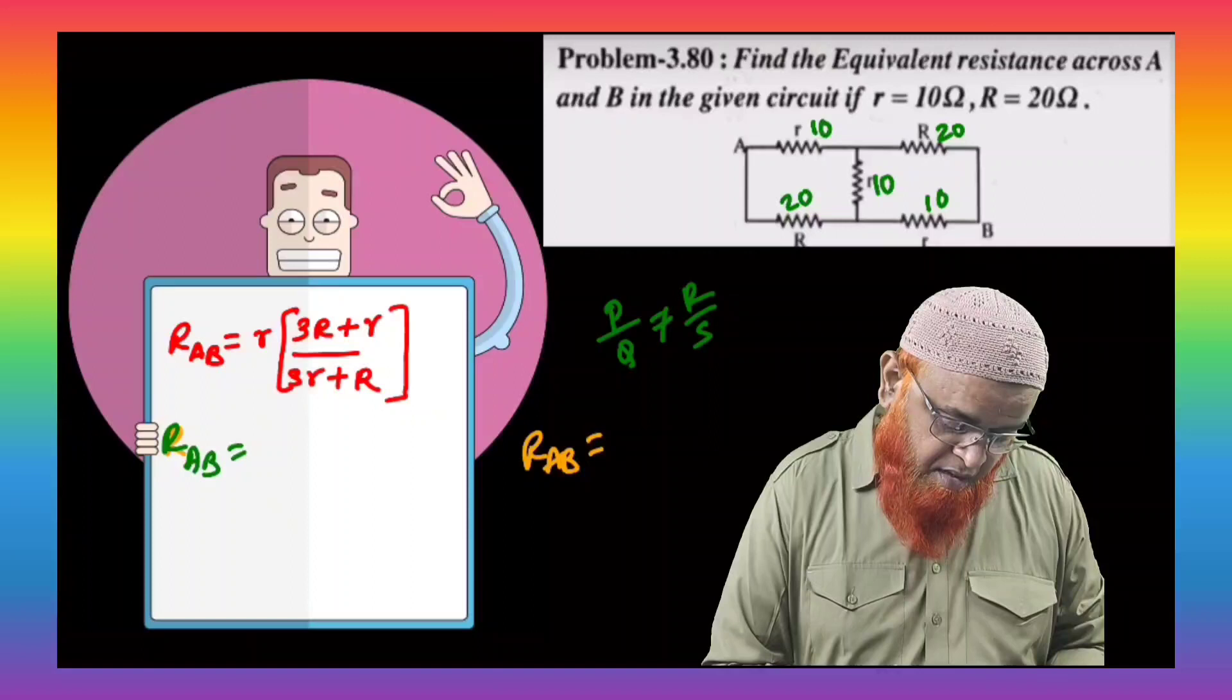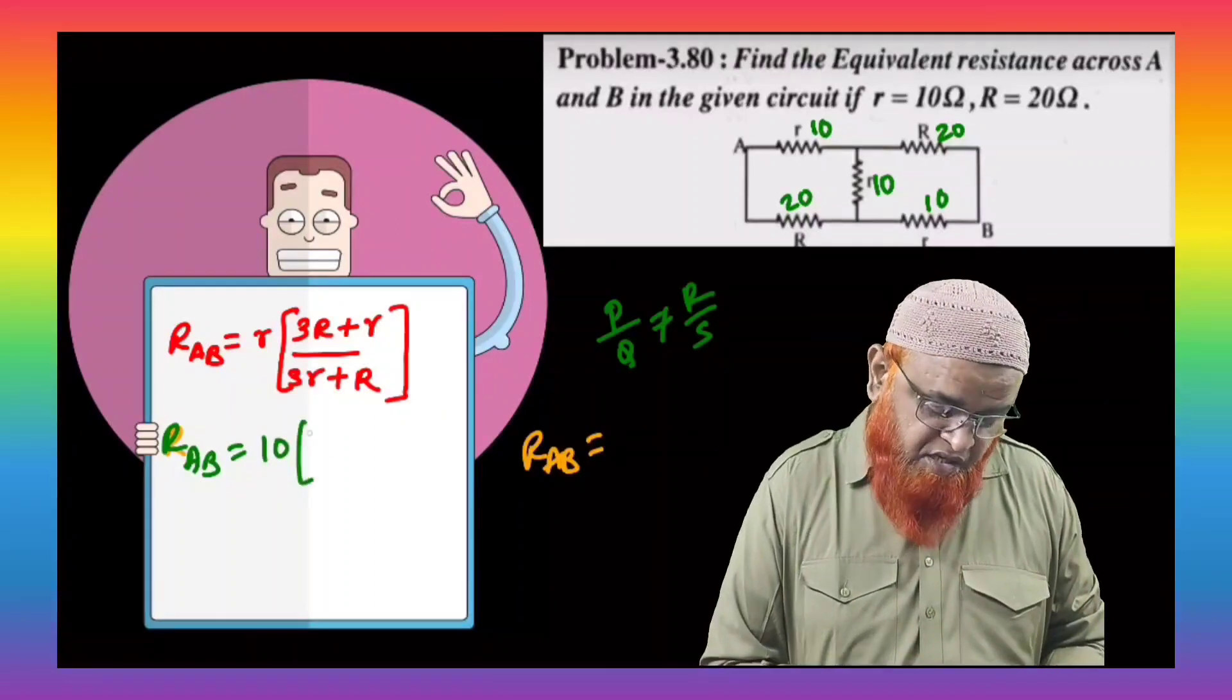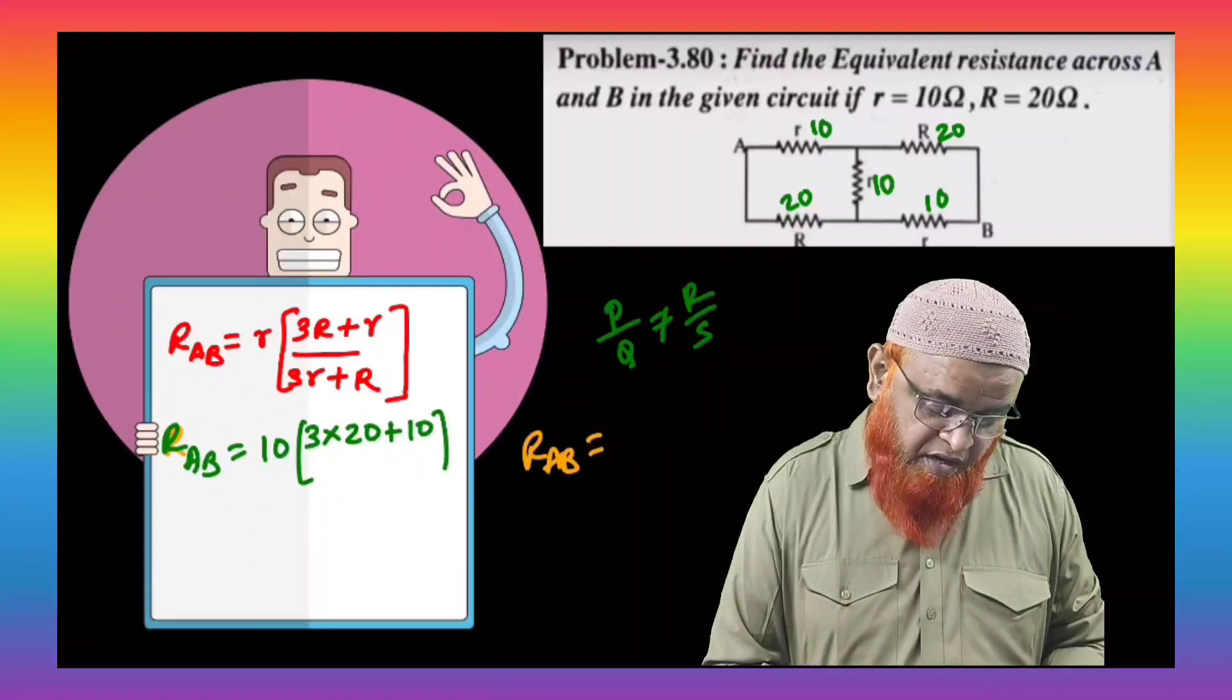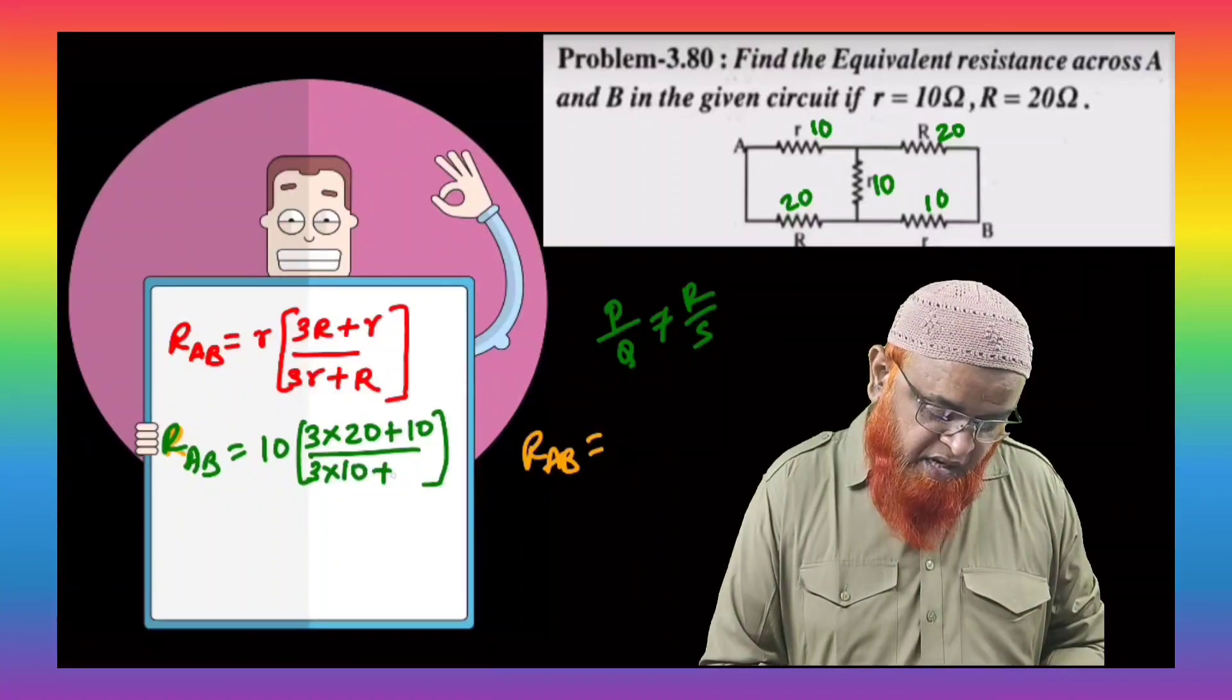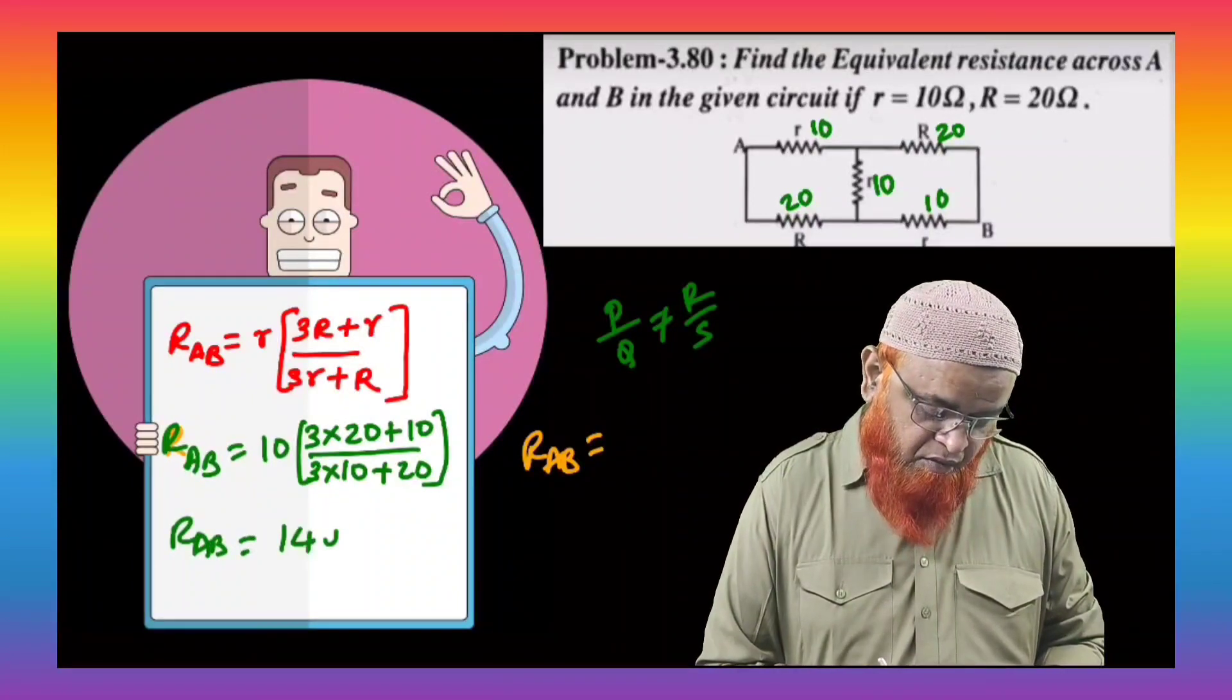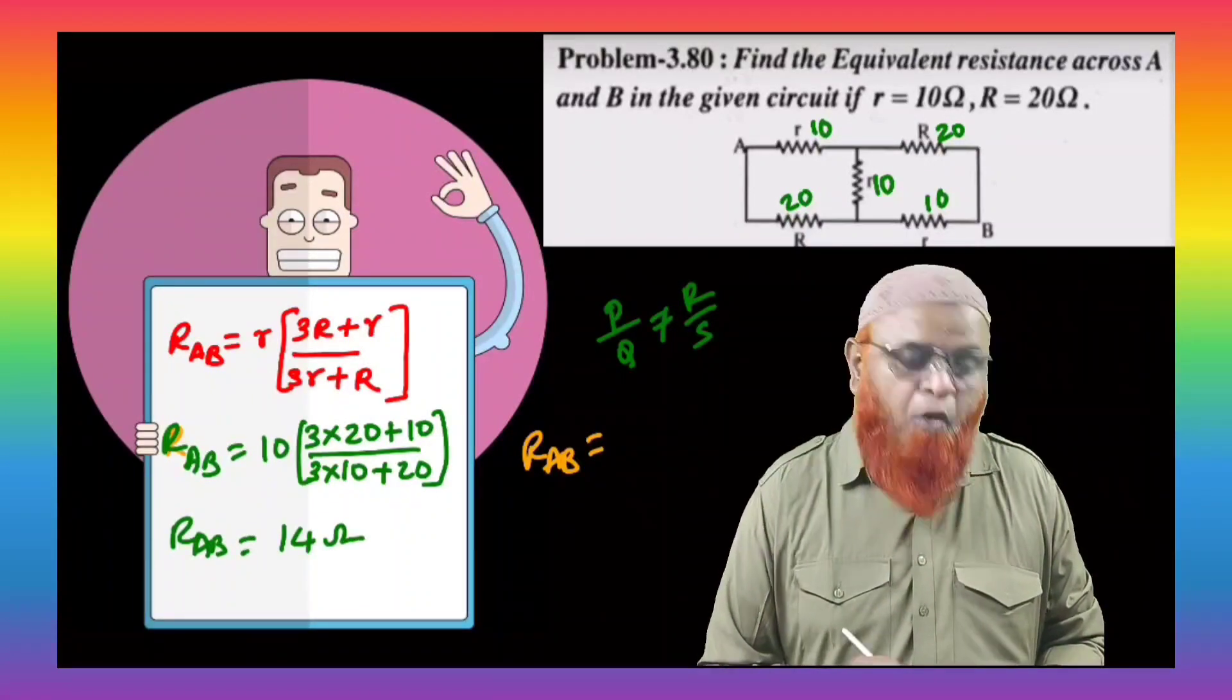RAB is going to be small r is nothing but 10. And 3 into capital R is going to be 20. So 3 into 20 plus 10 divided by 3 into 10 plus 20. Okay. So like this, if you go on solve, you will be getting finally as 14 ohms.